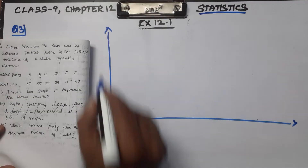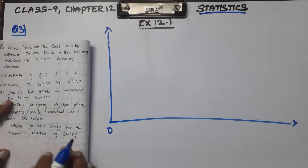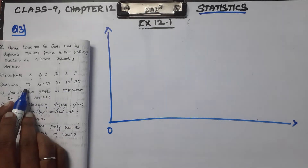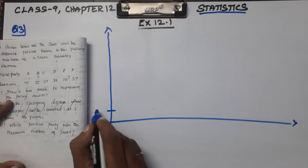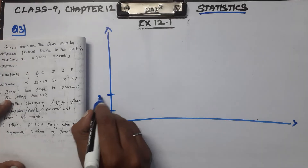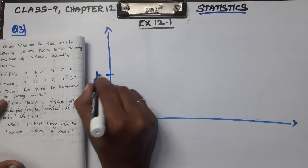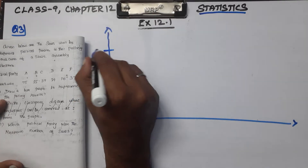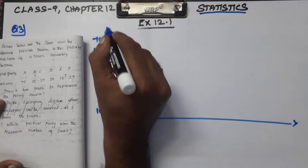Draw one horizontal line and one vertical line. The minimum value is 10 and the maximum value is 75. We will break this into intervals of 10: 10, 20, 30, 40, 50, 60, 70, 80.